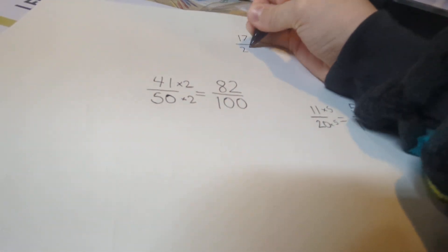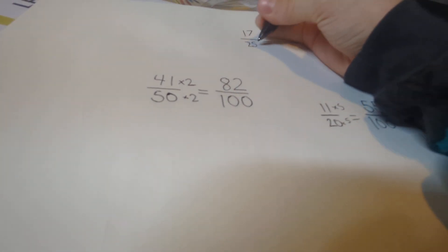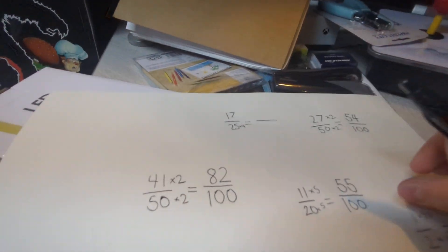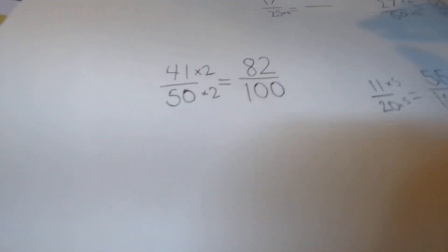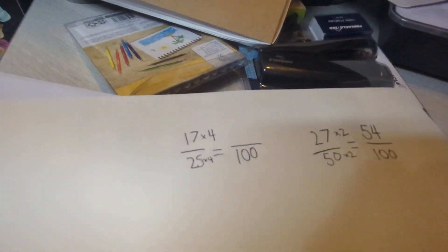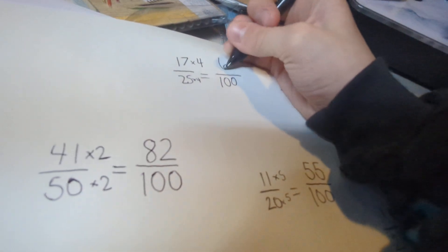Now let's try it for 17/25. So now you multiply it by 4. I believe you do. 25 times 4 is 100. 17 times 4 is 68.